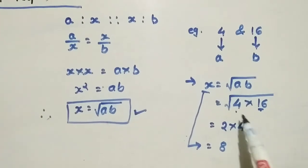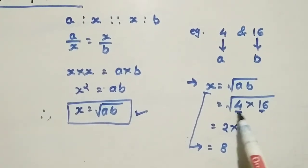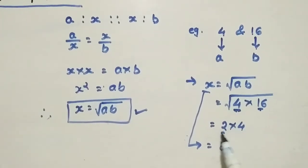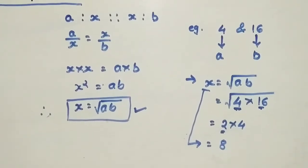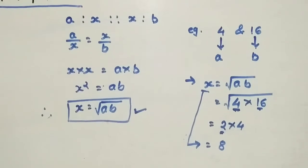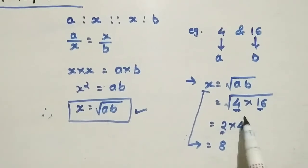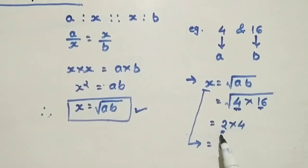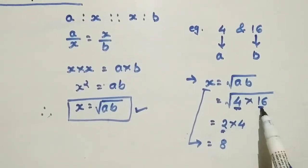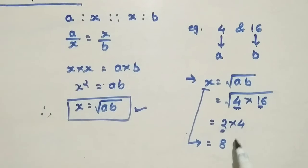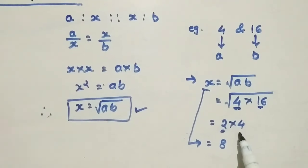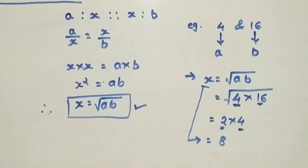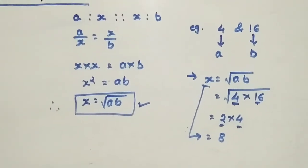Let me clarify how we simplified: the square root of 4 is 2, and the square root of 16 is 4, so 2 times 4 gives us 8. It's that simple.